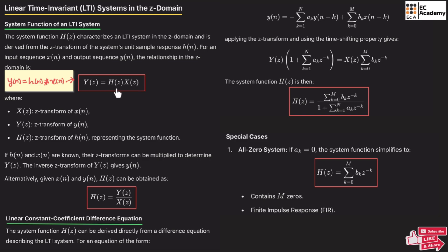Here H(z) is also known as the system function. From this equation, we can find the system function: H(z) = Y(z) / X(z). So if y(n) and x(n) are given, we can take the Z transform and find the system function H(z). Once Y(z) is known, if we take the inverse Z transform, we can find y(n).